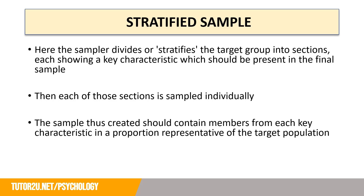Moving on to the third sampling technique: stratified sampling. A lot of people get scared when they see this term come up in an exam, but it's really not too difficult. Stratified sampling simply involves the sampler dividing or stratifying the target group into sections, each showing a key characteristic which should be present in the final sample. Then each of those sections is sampled individually, and the resulting sample should contain members from each key characteristic in a proportion representative of the target population.